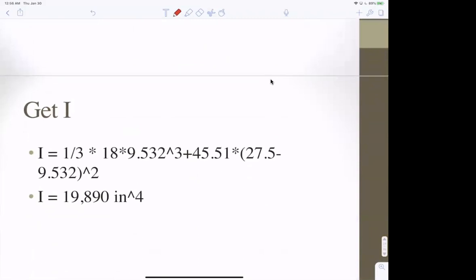Okay. So, get I. I'm going to do that. This is 9.532. This is 18. The moment of inertia of a rectangle about the bottom, not the middle, is 1 third base times height cubed. And then this is the moment of inertia of this. That distance is 27.5 minus 9.532. The number is 80 squared. There's A. And then here's that distance squared. And you get this for the moment of inertia.